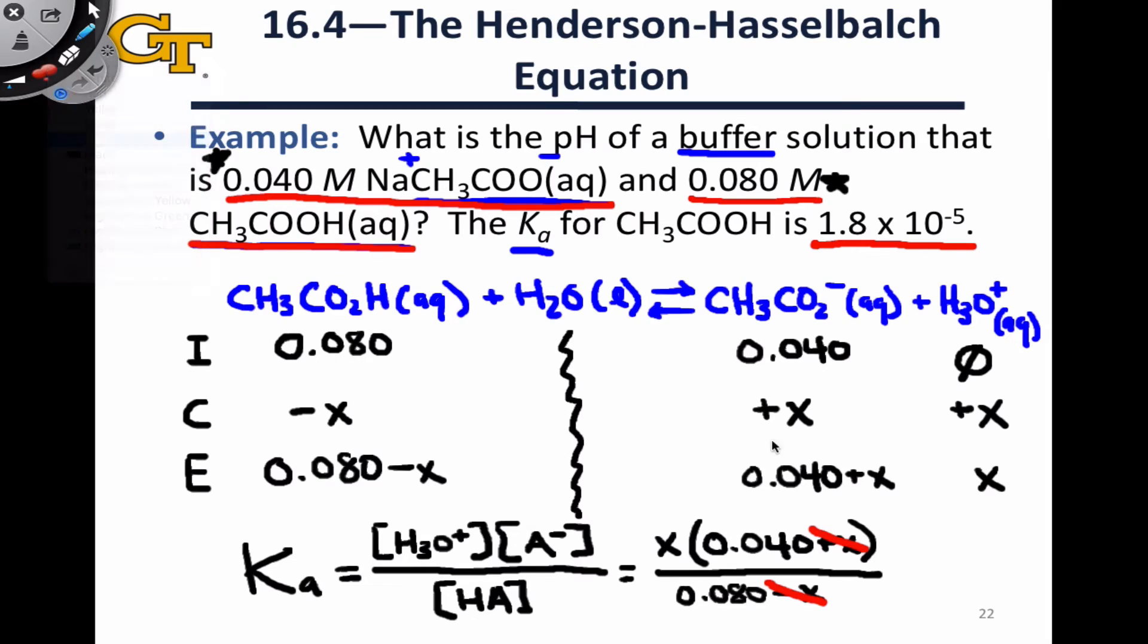we arrive at a final value of X is equal to 3.6 times 10 to the negative 5 moles per liter. Now this is the equilibrium concentration of hydronium. We can see that by noticing that the H3O+, equilibrium line of the ice table, this cell right here, is just equal to X. So to calculate the pH, we can just do the negative base 10 log of X, and that gets us to a value of 4.44 for the pH.